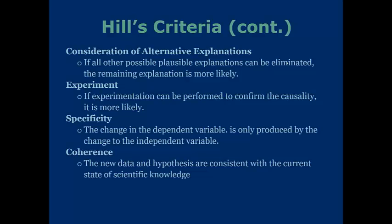Note that just because something isn't coherent doesn't necessarily mean it's not true. For example, when Einstein came out with his theory of relativity, it was not coherent with the current status of scientific knowledge, which stated that time was a constant moving thing. When Einstein stated that time was relative, that shook everything up — but obviously it was proven to be true, because now that is our current state of scientific knowledge. Keep in mind that all of these factors play a role in finding correlation and causation between independent and dependent variables.